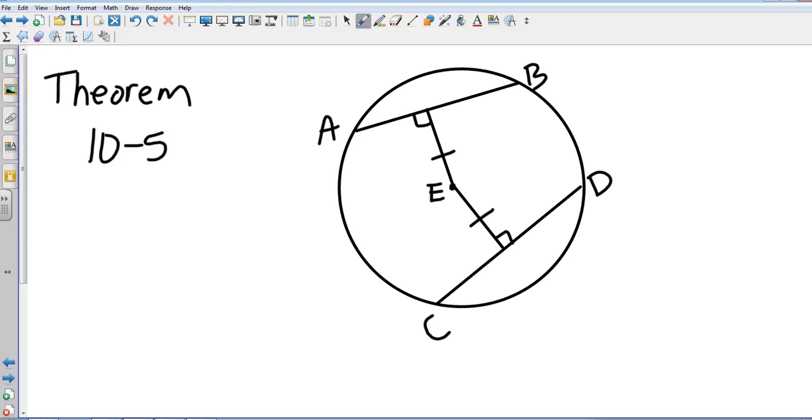Okay, theorem 10-4 was basically just 10-3—the wording was just switched. For 10-4, if you're keeping track: the perpendicular bisector of a chord is a diameter of the circle. So again, just stating the same thing in a different way.